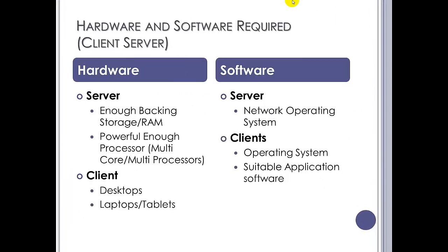What do you need hardware and software wise? If you're running a client server network, hardware wise you'll need a fairly powerful server — powerful enough with sufficient backing storage and RAM and a processor capable of handling what you're asking it to do. The clients themselves will just need some kind of client machine: a suitable desktop, laptop, or tablet. Software wise, the server will need a server operating system capable of accepting connections from multiple machines, and the clients will need the client version of the operating system and any suitable application software for the job they do.